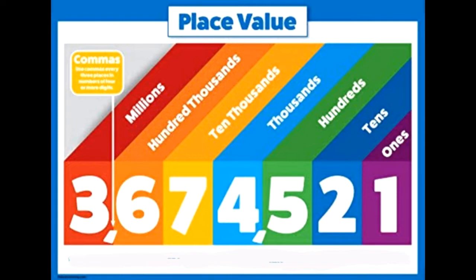I'm going to put a comma after 3 and after 4. Now let us know the value of each digit. Starting from the right: 1 is in the ones place, 2 is in the tens place, 5 is in the hundreds place, 4 is in the thousands place, 7 is in the ten thousands place, 6 is in the hundred thousands place, and 3 is in the millions place.